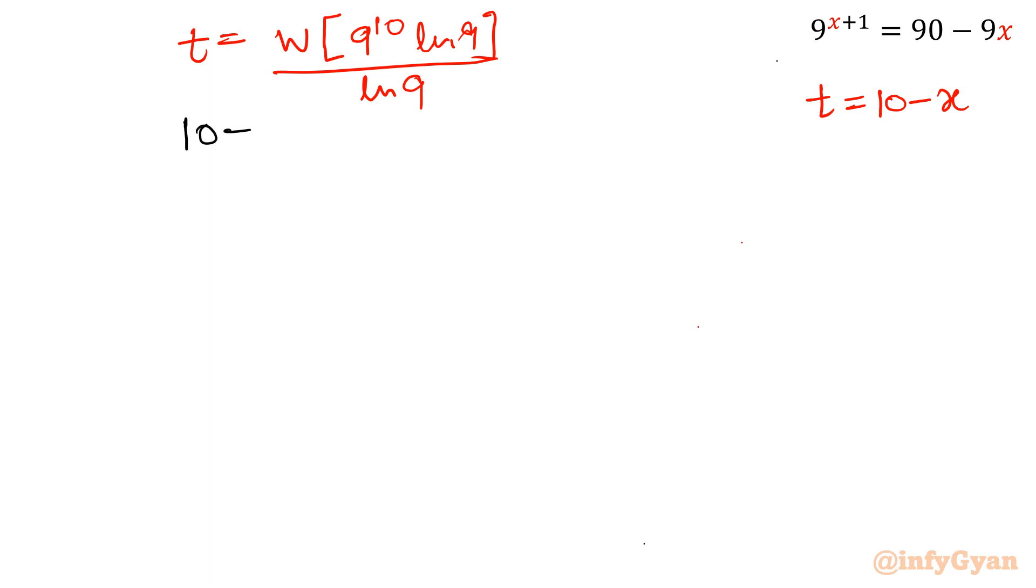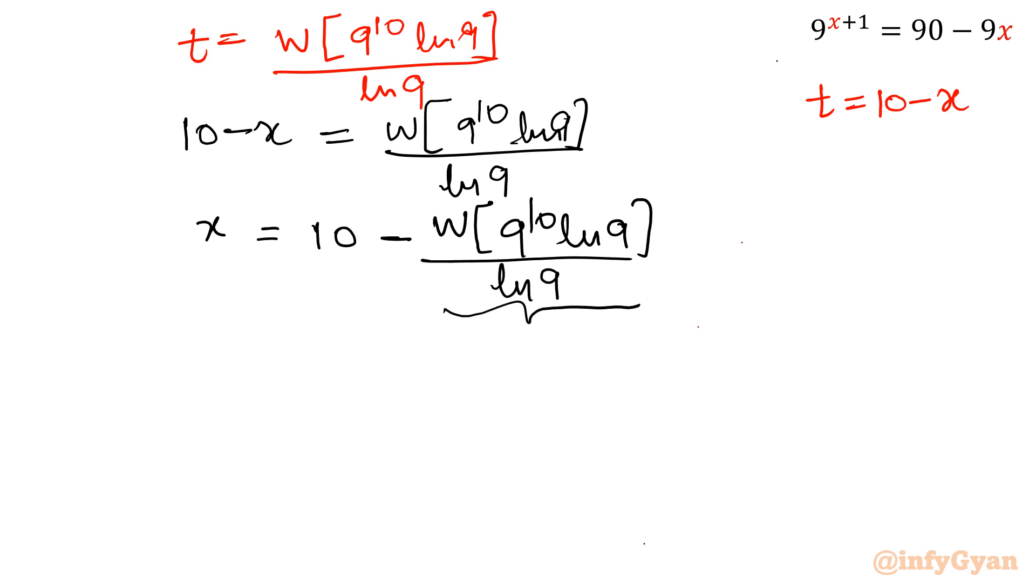Let me write here, ln 9 over ln 9. Now x would be equal to 10 minus Lambert W 9 power 10 ln 9 over ln 9. And if you will use Wolfram Alpha tool this value will come out 9. So our final answer becomes 10 minus 9. x will be 1.